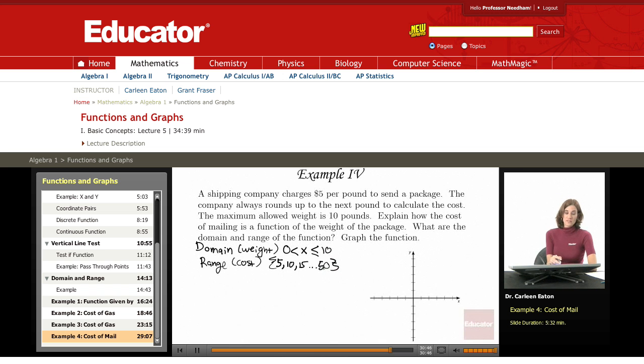So the domain here is X value greater than 0 and less than or equal to 10, while the range, or the cost, is 5, 10, 15, 20, and on up to 50. Okay, so I've got my domain and range.